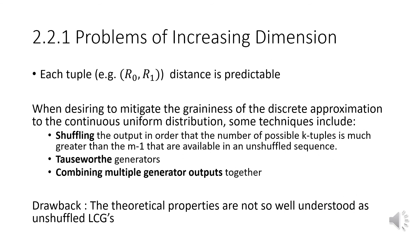Finally, a bit about problems of increasing dimensions. As you saw before, there's some repetition in the distances between each of the tuples. There's some techniques that can be used to mitigate that graininess of the discrete approximation. One of which is shuffling the output so that the number of possible k-tuples is much greater than the M minus one that are available in an unshuffled sequence. Additionally, there's something called Towsworth generators that can be used, and as well, combining multiple generator outputs together.